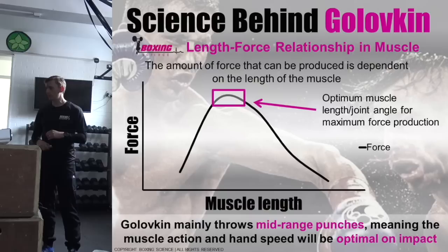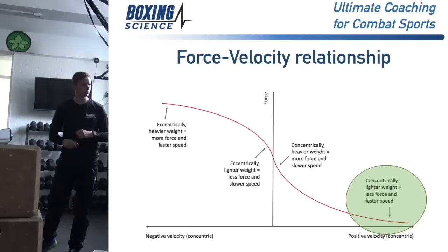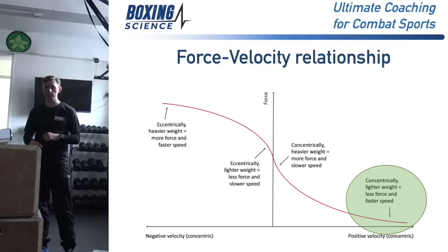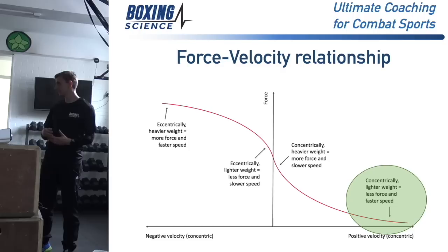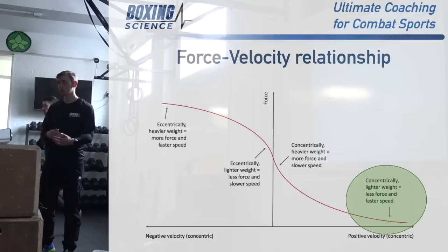Another very important relationship is the amount of force you can produce relative to the amount of speed you can produce. In a concentric action, the faster you are, the less force you can produce - which is counterintuitive to what I've just said. But it explains why you see guys that are really, really quick but very ineffective. So you need that balance between how much force you can produce and how effective that force is at the speed that you're producing it.